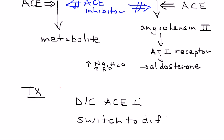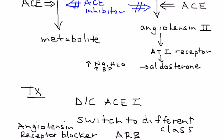Basically, you have to discontinue the ACE inhibitor and switch to a different class of medication. One very common class of medication that's prescribed, if this scenario occurs, is a medication known as an ARB. ARB stands for angiotensin receptor blocker.